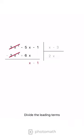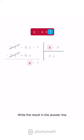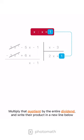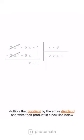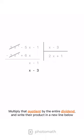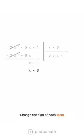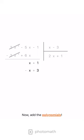Divide the leading terms, write the result in the answer line, multiply that quotient by the entire divisor and write their product in a new line below. Change the sign of each term, then add the polynomials.